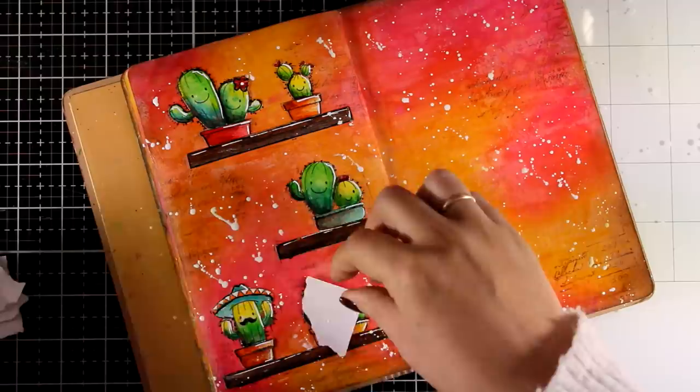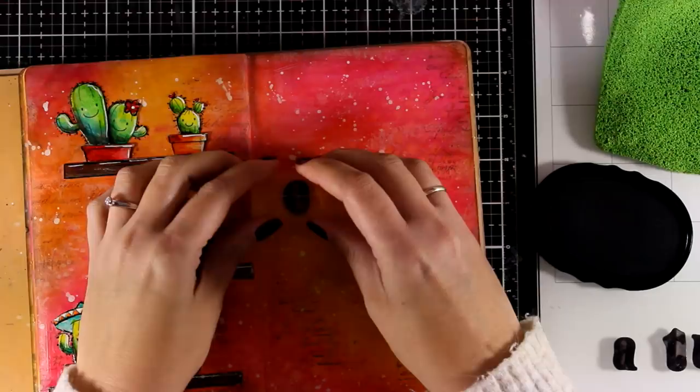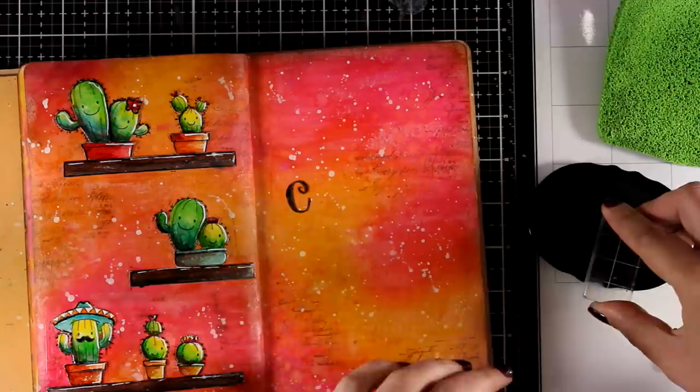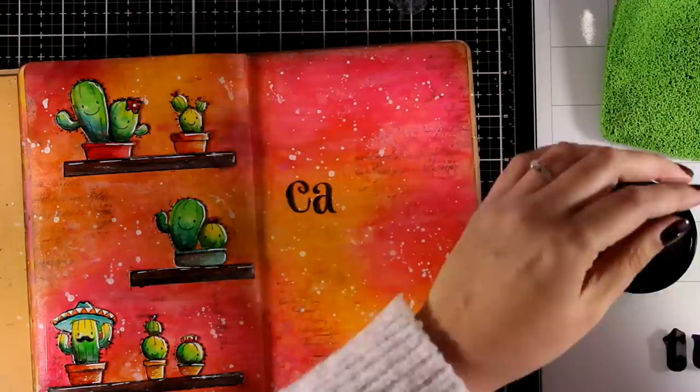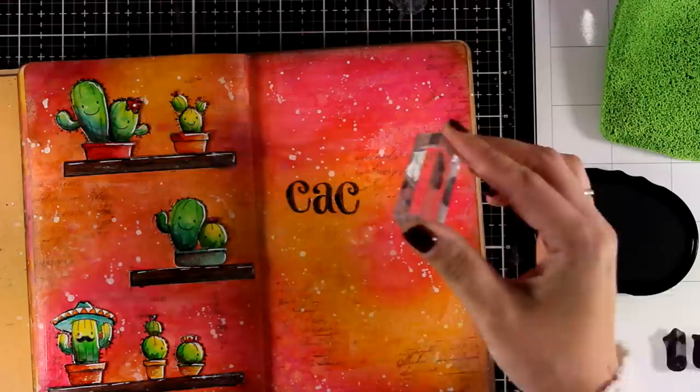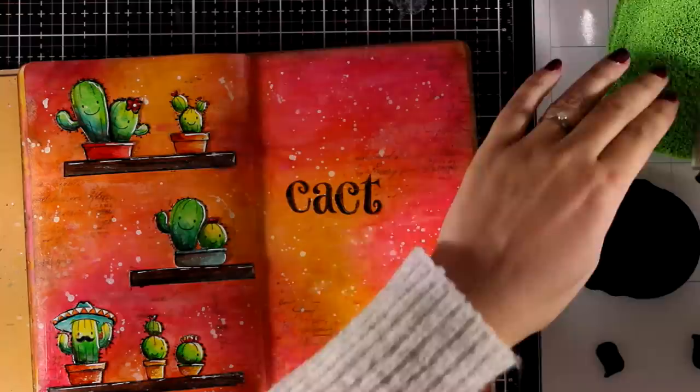Gesso on top of matte medium doesn't dry super fast. So if you don't like some of those white splashes, you can always wipe them out with a baby wipe, which is what I did with some of the bigger ones. Now, if you have wonderful handwriting, then you can write your quote on your pages. I prefer to stamp them. And I'm combining two different alphabet fonts here. I love alphabet stamps and I have been collecting lots of them throughout the years. So I like to go back to them and use them on my pages.